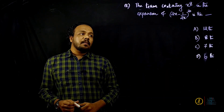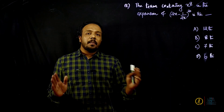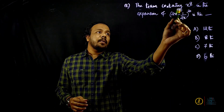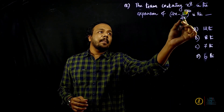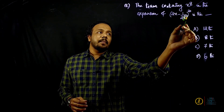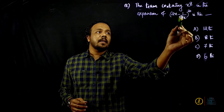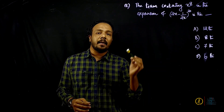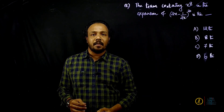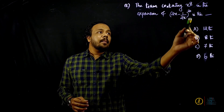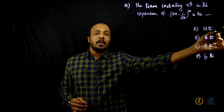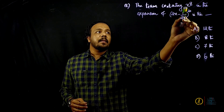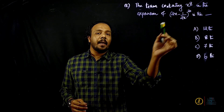If you want to find this term, you will need to expand the expression — that is, (2x minus 1 by 2x) all raised to 20. We need to find the term containing x raised to 8.